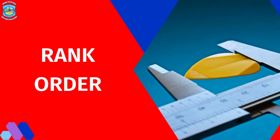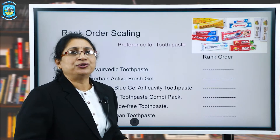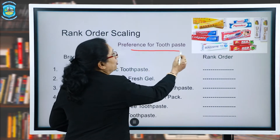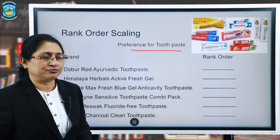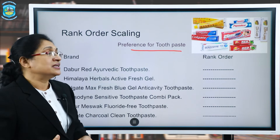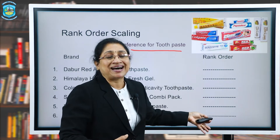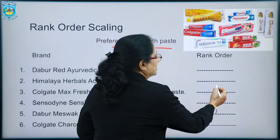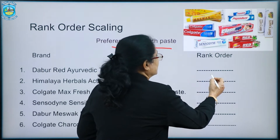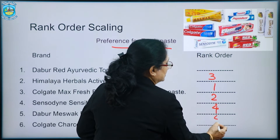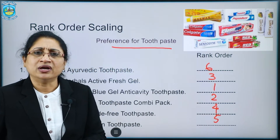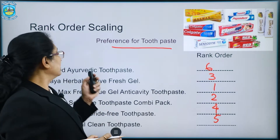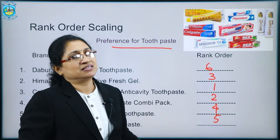Moving on to rank order scaling — this is commonly used by marketers. For example, taking different brands of toothpaste and asking respondents to put them in order of preference, ranking them from one to six. The researcher comes to know how consumers prefer the different brands taken into the question.